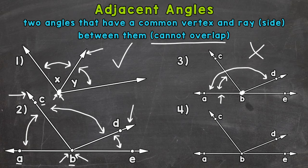Lastly, number four: we're going to take a look at angle ABC and angle DBE — this angle here. Those two angles do share a vertex, but they do not share a side or a ray. Remember, adjacent angles have to have a common vertex and ray or side — they have to have both. So those two angles would not be adjacent either.